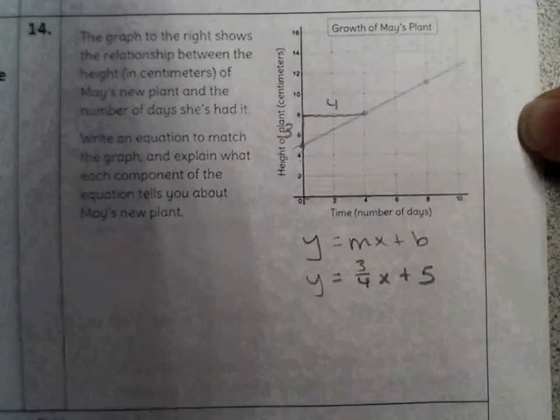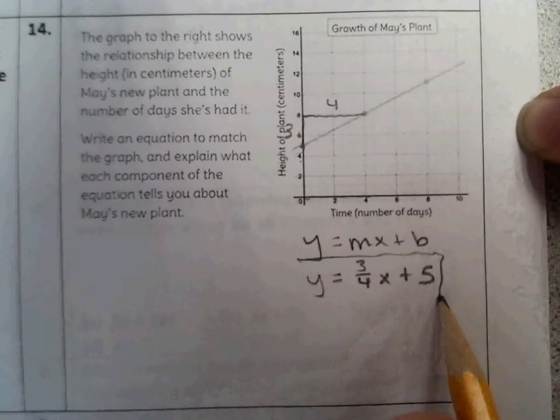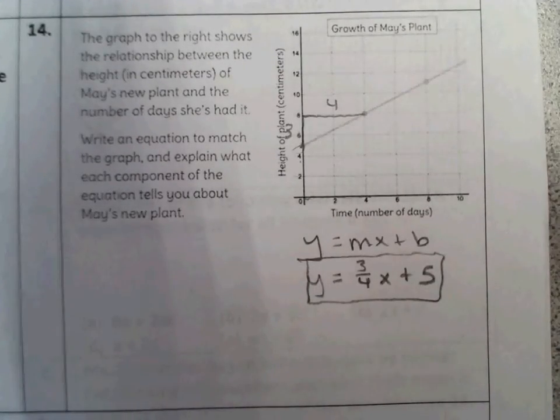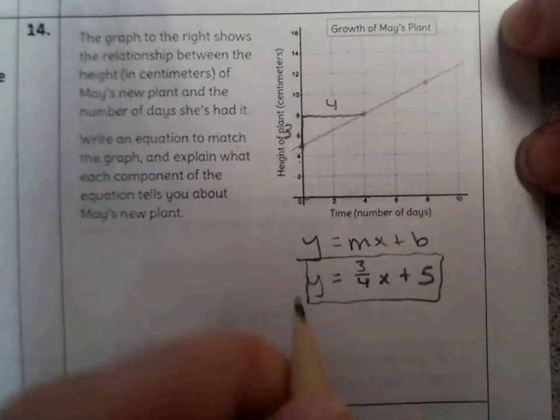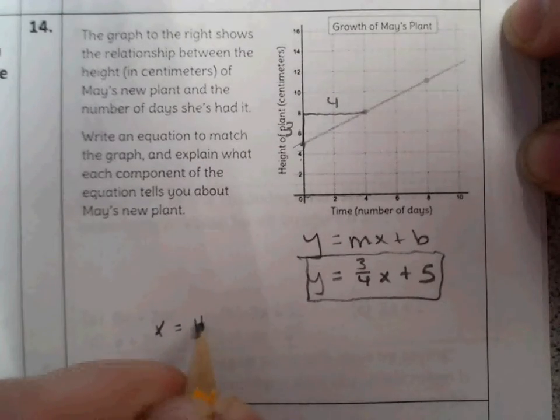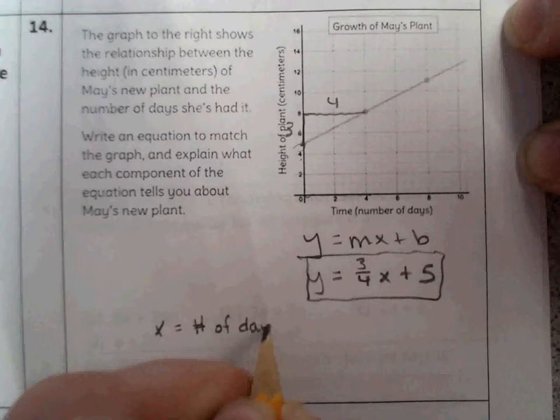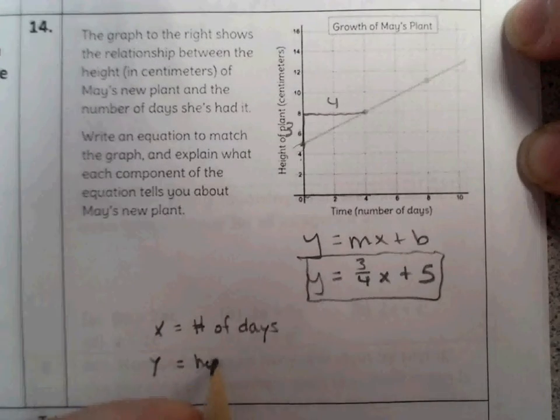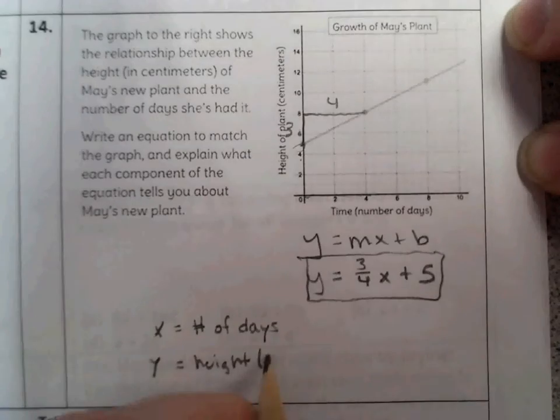Okay, so there's my equation. y equals 3 fourths x plus 5. Now, it says write an equation to match the graph and explain what each component of the equation tells you. The variables are pretty simple. I know that x represents the number of days that the plant has grown. I know that y represents the height of the plant, and that's in centimeters.